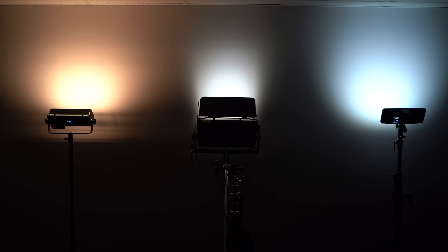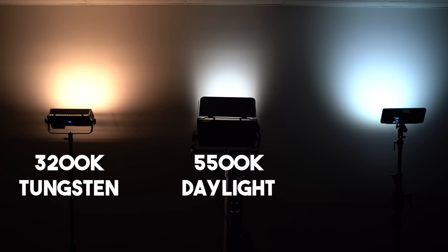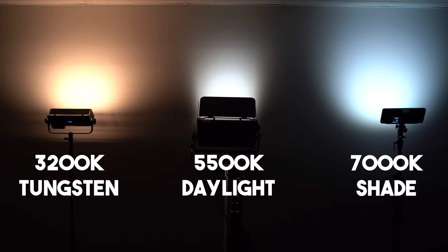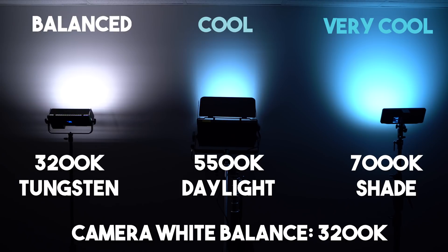Here are three LED lights. The left light is at 3200 Kelvin to represent tungsten lighting, the center is at 5500 Kelvin to represent daylight, and the rightmost panel is at 7000 Kelvin to represent shade. All three lights will remain at these temperatures as we modify the camera's Kelvin setting. With the camera set to 3200 Kelvin, we are balanced for the left LED, which looks white. You'll notice as we go right, the colors get cooler or more blue as the Kelvin temperature increases.